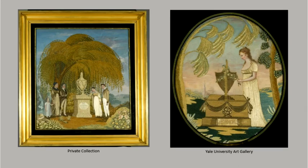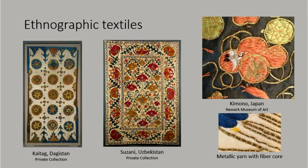Ethnographic textiles like kai tags, kizani, and embroidered Japanese kimonos feature some of the most intricate needlework. You may also find metallic yarns in such pieces. Some metallic yarns are yarn cores wrapped in thin strips of metal or thin strips of gilded paper.